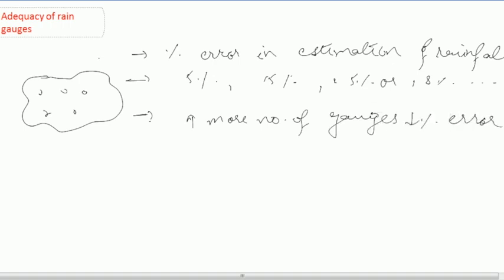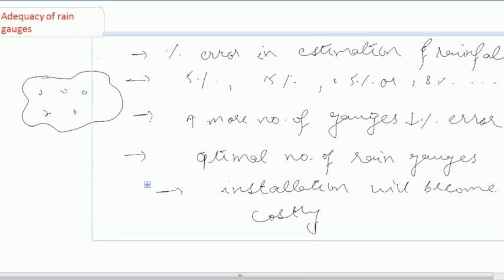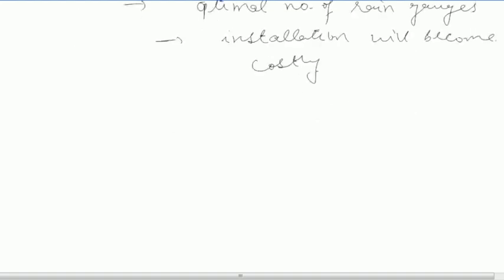It is also said that the more the number of gauges in a particular catchment area, the less the percent error in estimation of rainfall. But we have to look for the optimal number of rain gauges, else the installation will become costly. So what we do is we set our percent error equal to 10%. The percent error of estimation of all the rain gauges should be in total 10%.